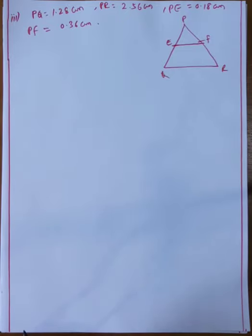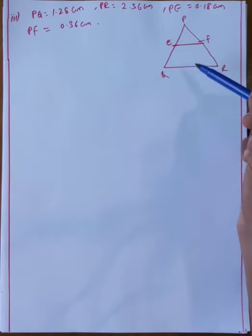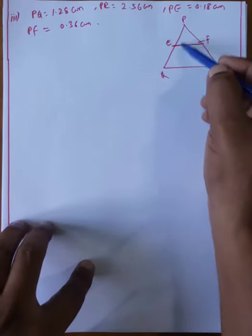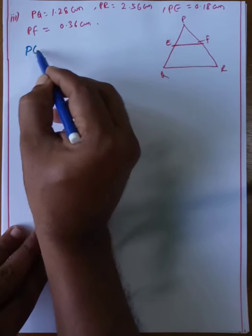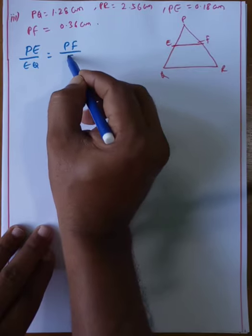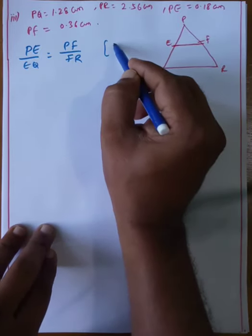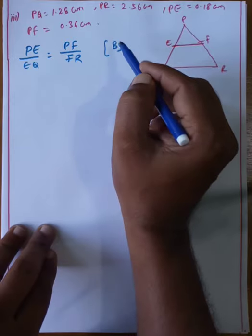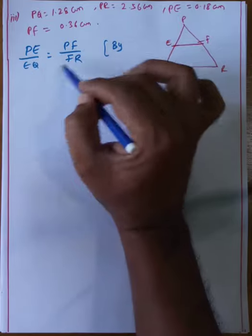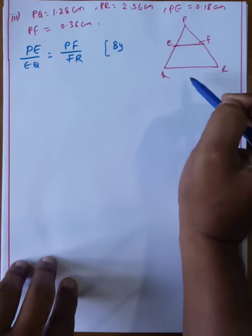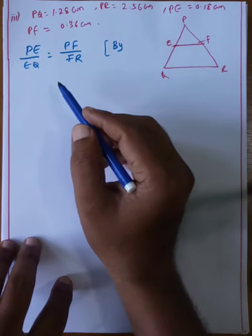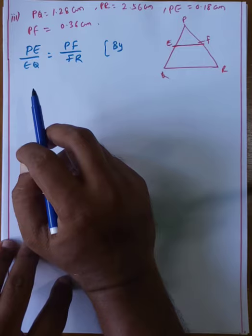Case 3: We check PE by EQ equals PF by FR using the converse of BPT. PE is 0.18, total PQ is 1.28, so EQ equals 1.28 minus 0.18 equals 1.10. PF is 0.36, total PR is 2.56, so FR equals 2.56 minus 0.36 equals 2.20.